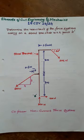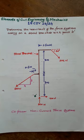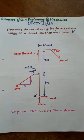The subject is Elements of Civil Engineering and Engineering Mechanics, code 18CIB14 or 24. The problem statement is: determine the resultant of the force system acting on a steel bracket.